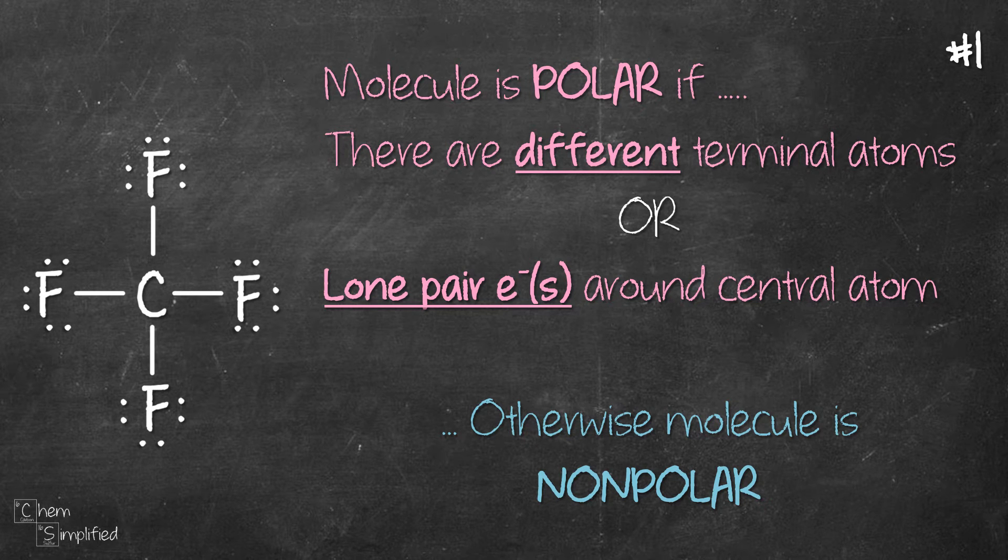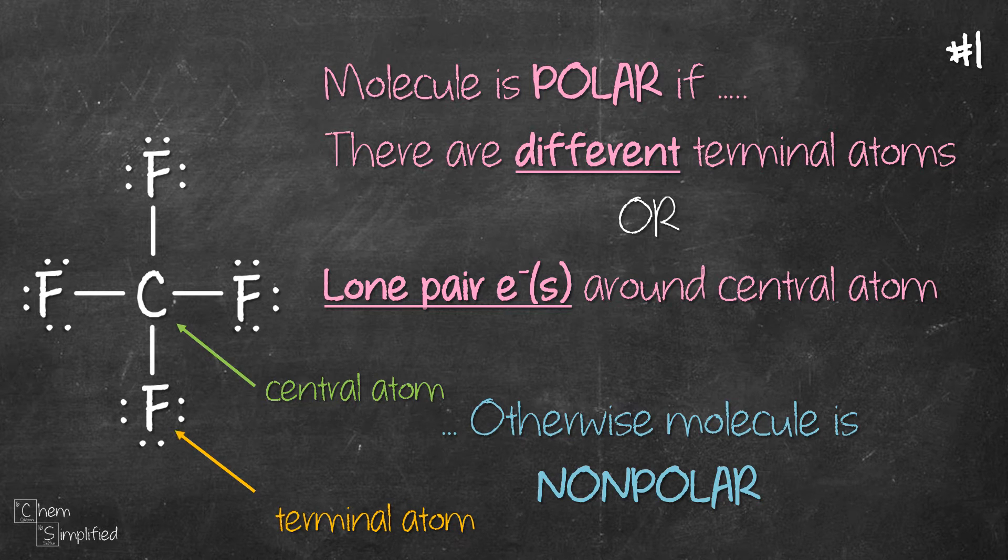CF4, our first example. Before we start, let's just make sure that we know which is the terminal atom and which is the central atom. So, in this example, carbon is the central atom since it is at the center of the molecule, and fluorine, F, is the terminal atom because it surrounds the carbon. Terminal because it is at the end. And lone pairs are a set of electrons like this.